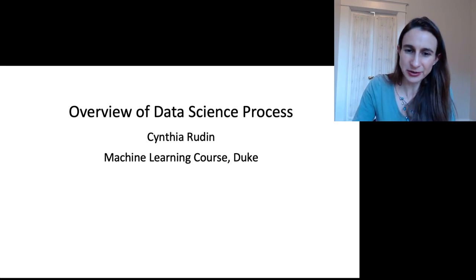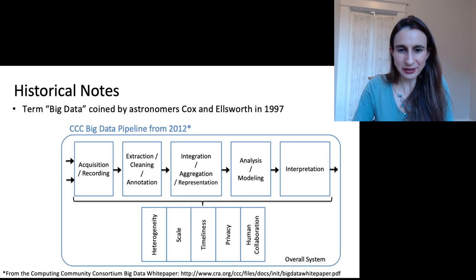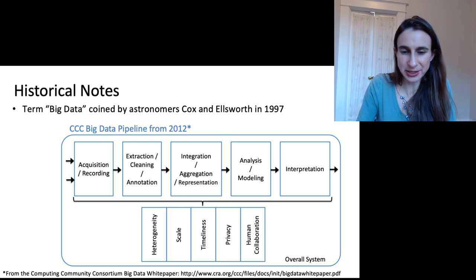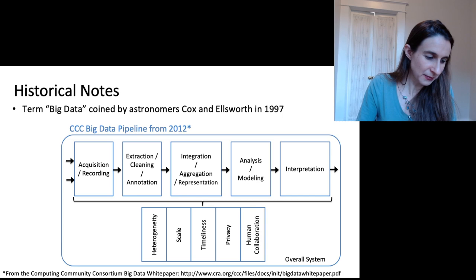I want to give you some historical notes on the terms data science and big data. In particular, I just want to talk about the term big data. Big data was coined by two astronomers back in 1997. It's an old term that got a bit hyped up around 2012 when the CCC white papers came out on big data.